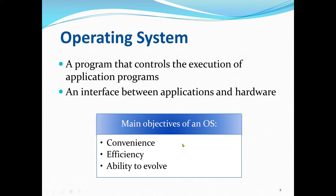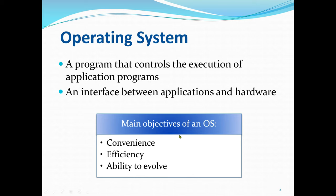An Operating System can be thought of as having three main objectives. One is convenience — an Operating System makes a computer more convenient to use. The second is efficiency — the Operating System allows computer system resources to be used efficiently, such as CPU scheduling or memory sharing. The third is the ability to evolve, so an Operating System should be constructed to permit effective development, testing, and introduction of new system functions without interfering with service.